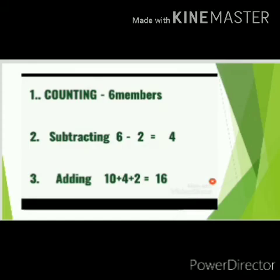Okay, you may get this answer. What are the steps taken for getting this answer? For the first question, you may be counting the number of members. For the next question, you are subtracting two — that is, two children — from the total number of members in their family. The answer is four. Next, for the third question: new relatives ten members, plus the family members four, and then two children — totally sixteen.